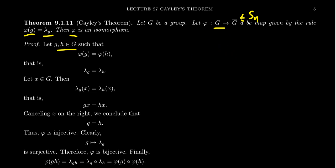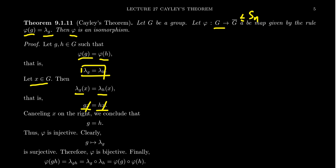To show φ is injective: suppose φ(g) = φ(h), meaning λ_g = λ_h. Pick an arbitrary element x; since the functions are equal, λ_g(x) = λ_h(x), so gx = hx. Since x was chosen arbitrarily, we cancel x from the right and get g = h. Therefore φ is injective.